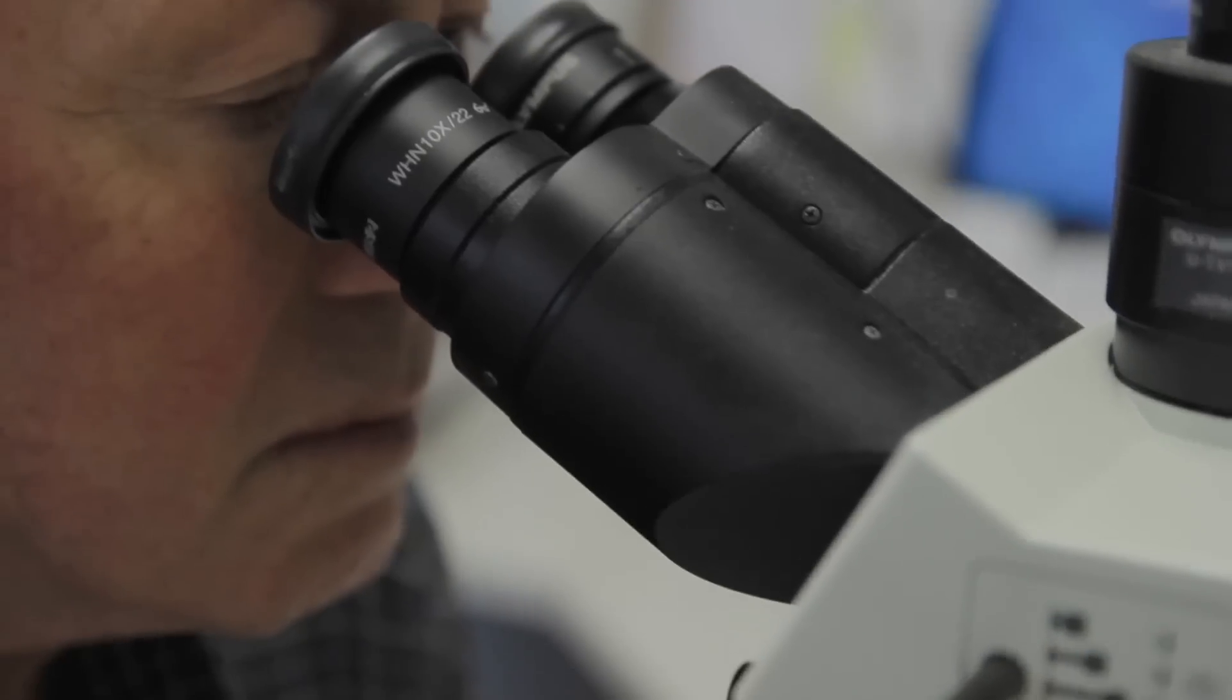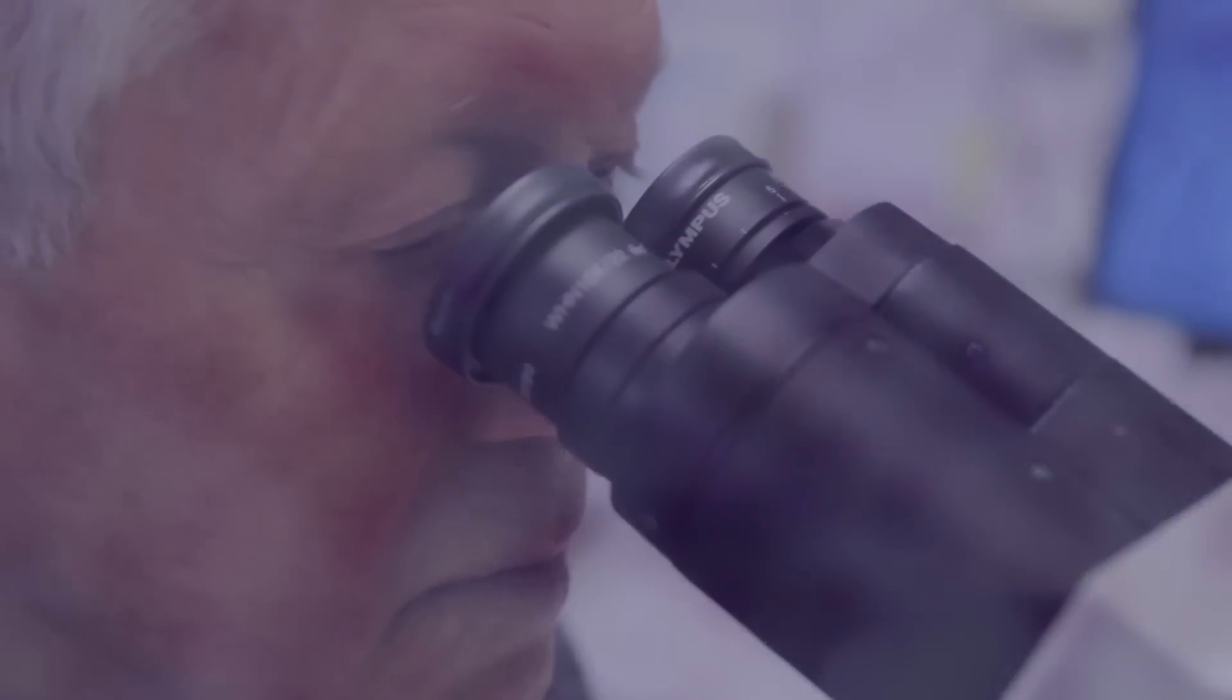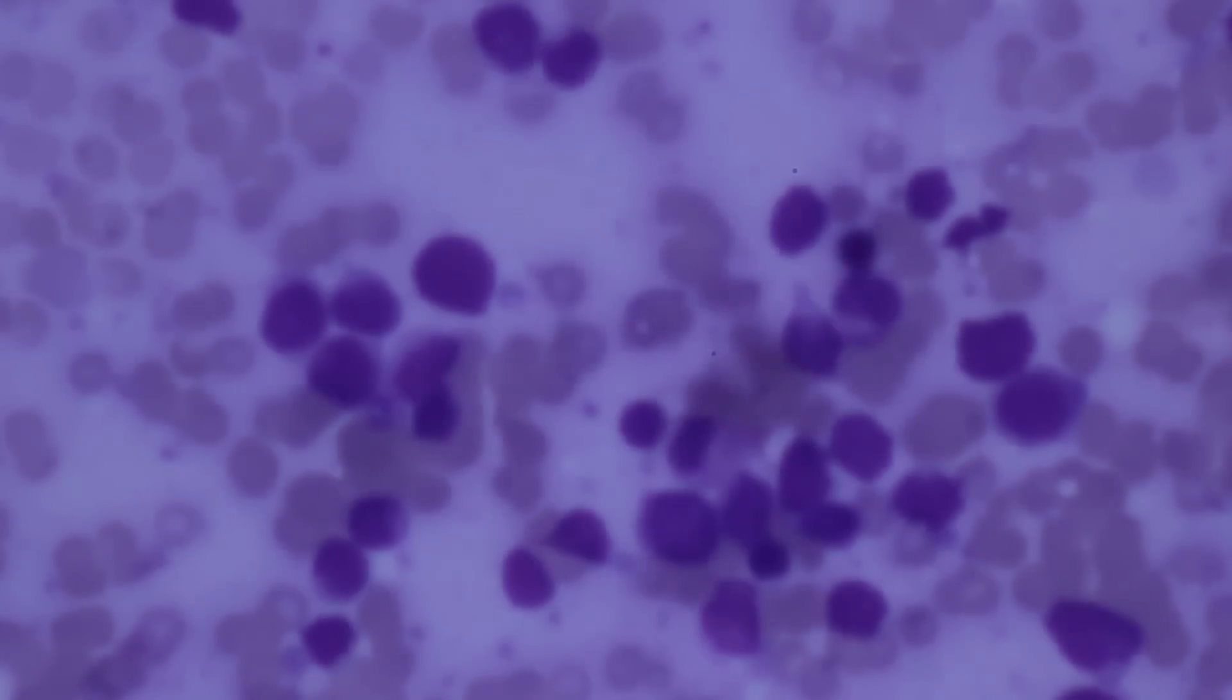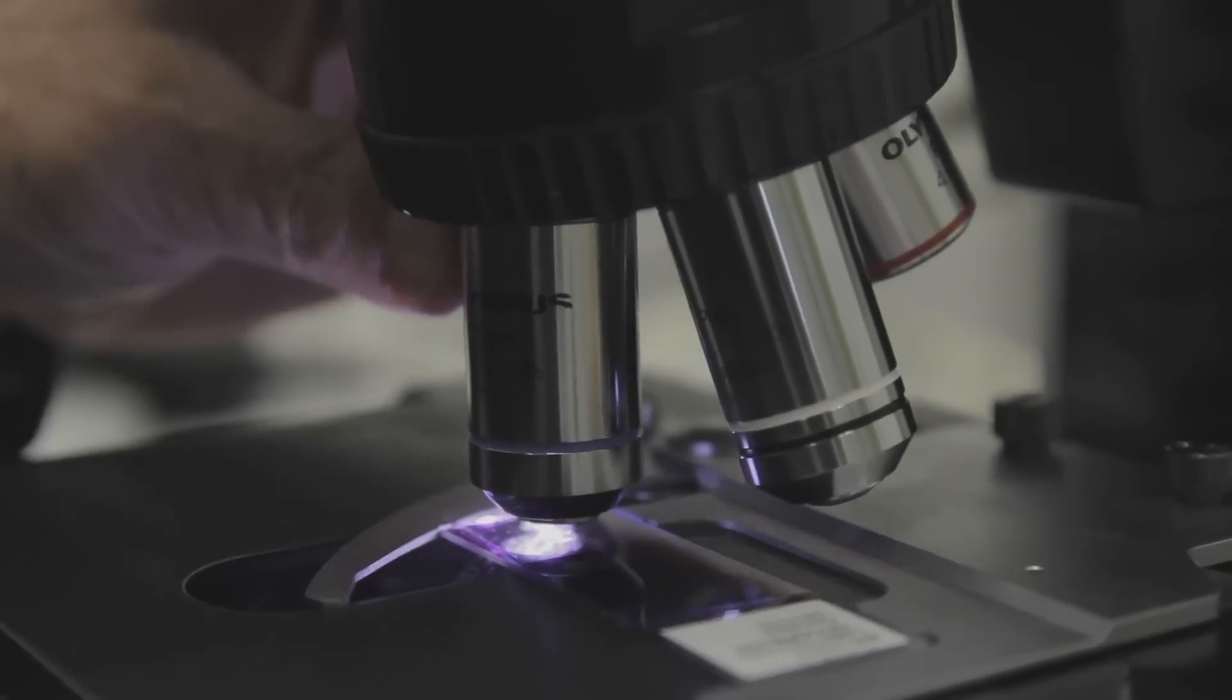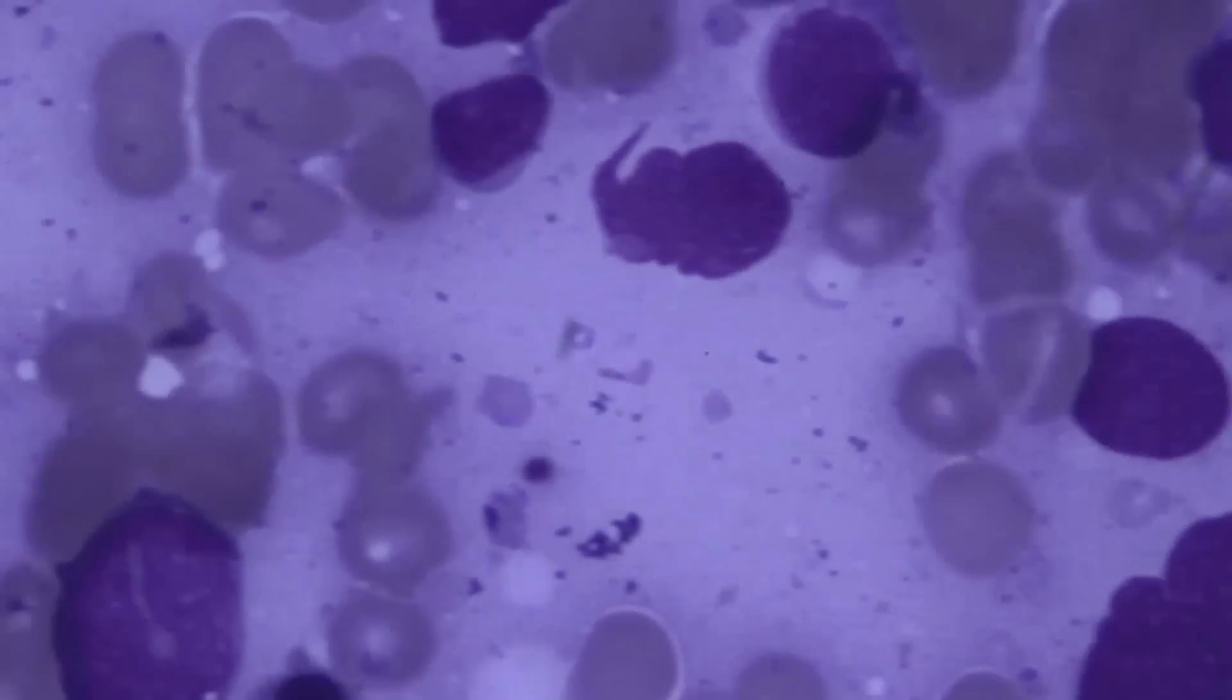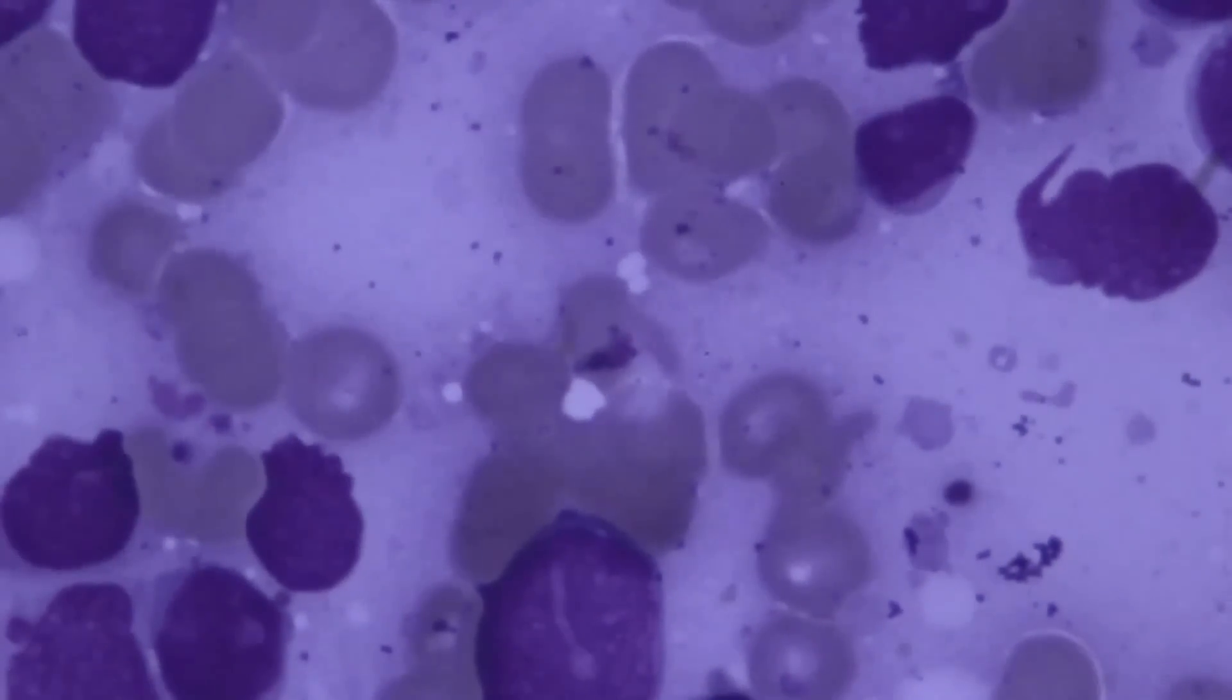When a patient presents with leukemia, the bone marrow is packed with leukemic cells. But once the proportion of leukemic cells drops below about 1%, you can't detect them by eye. You need more sensitive detection.